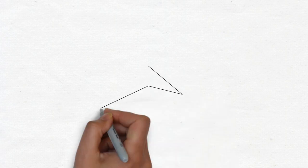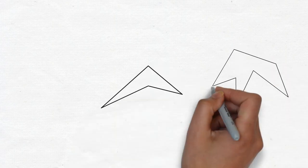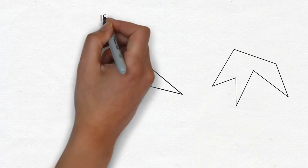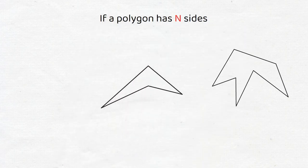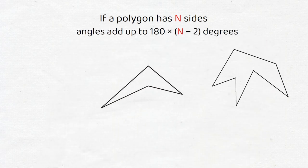A polygon is a closed curve that is made out of straight lines. It is a general theorem that if a polygon has n sides, then its angles add up to 180 × (n - 2) degrees.